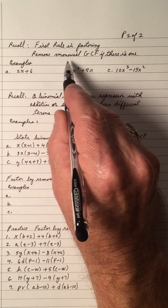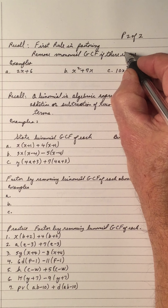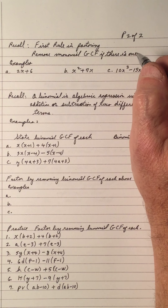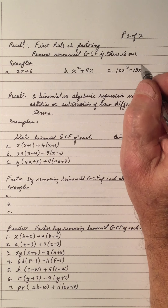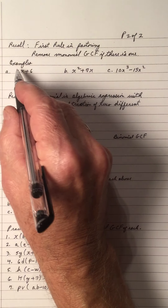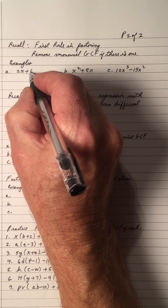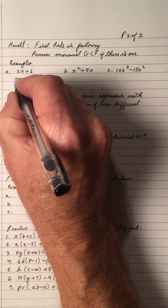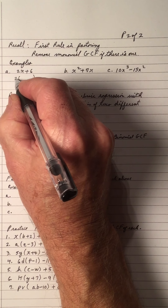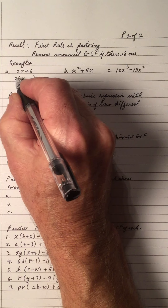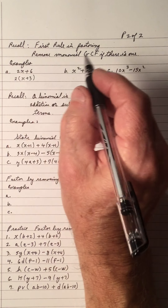Let's start. Recall the first rule of factoring: remove the monomial GCF if there is one. For example, 2x plus 6 — 2 is common to both 2 and 6, so we take 2 outside: 2x divided by 2 is x, and 6 divided by 2 is 3.